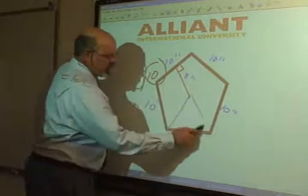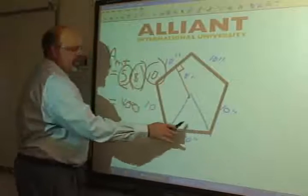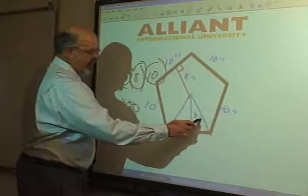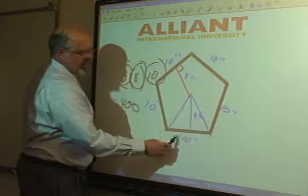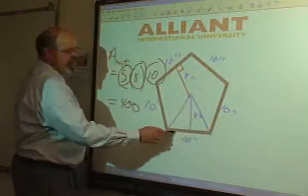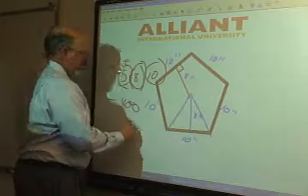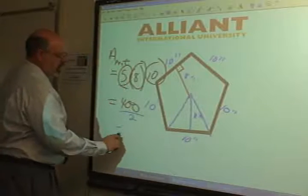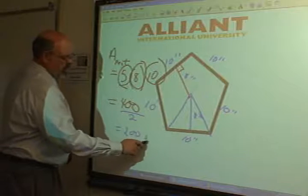There's literally five of these triangles in here. They're all identical. This is eight, eight inches, so ten by eight is eighty, divided by two is forty. Yeah, so I've got to divide that by two. Two hundred square units.